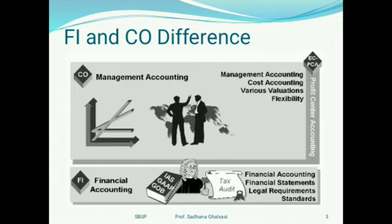Financial management is all about accounting standards such as IAS and GAAP. It has statutory requirements — there are standards and requirements which are legal in nature, and hence there is very less flexibility when it comes to reporting in FI. Whereas in management accounting, covered through CO, we have a lot of flexibility because formats can be company-specific, and there are no legal requirements for publishing reports in a specific format. Hence we can derive reports at any intervals and using any numbers we want.